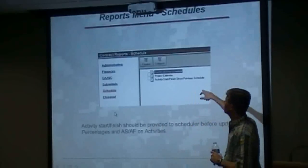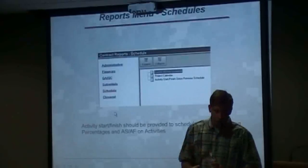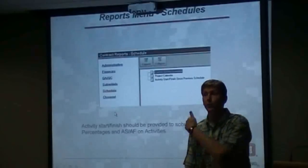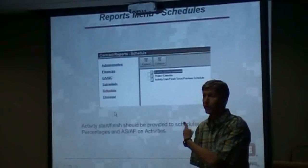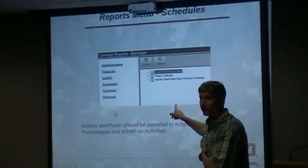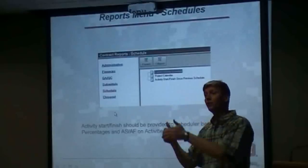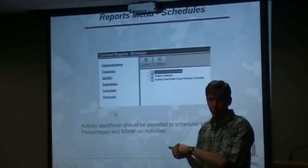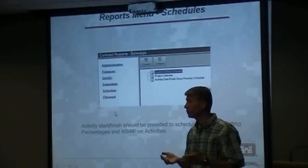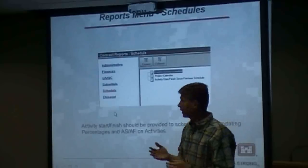The last one there is activities with start and finish dates since the previous schedule. This is the one that will get you in trouble if your scheduler is not reviewing this report when he's doing his monthly update. You need to run this report and give it to the scheduler. As the scheduler statuses the schedule, he needs to use the actual start dates that the QC used — as long as the QC's right. Otherwise you need to get the QC's corrected and get the scheduler's right.